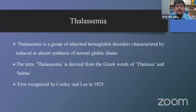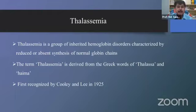Thalassemia is one of the big burdens of our country. What is thalassemia? Thalassemia is a group of inherited globin disorders characterized by reduced or absent synthesis of normal hemoglobin chains. It is an inherited hemoglobin disorder. There are two types: thalassemia and hemoglobinopathies.